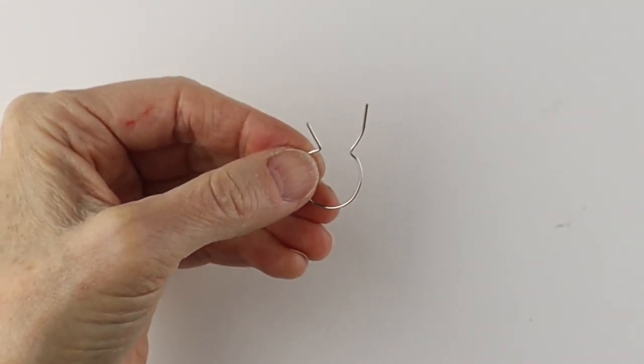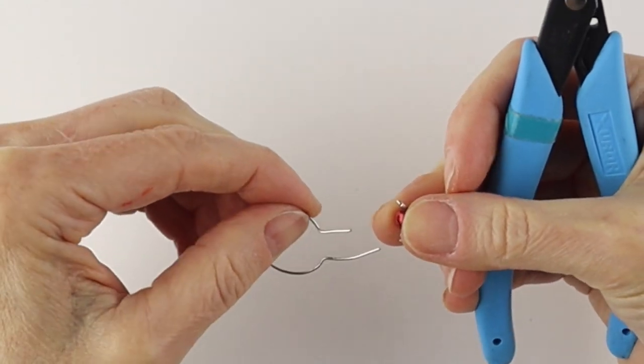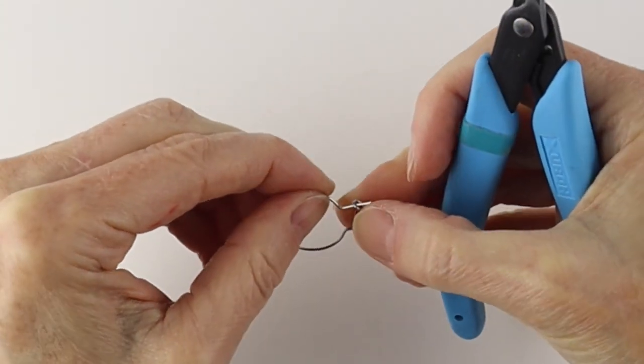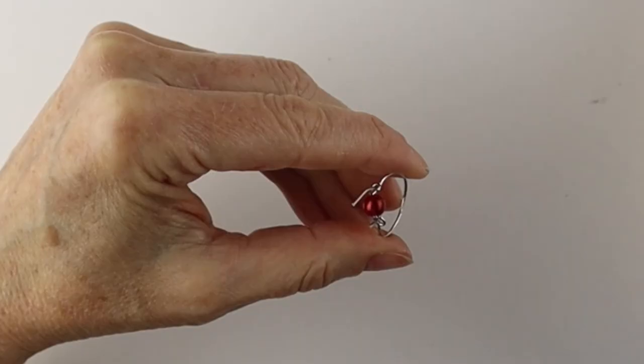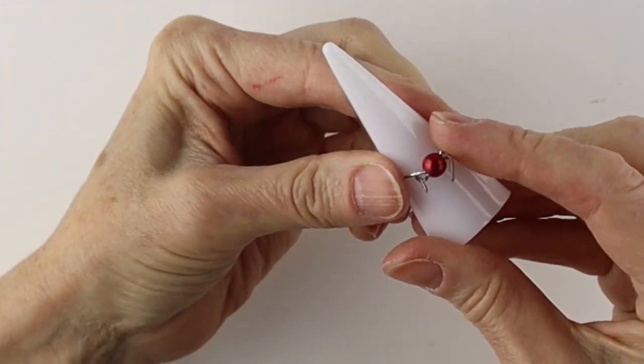Doesn't matter if they're exactly the same. Now stick these two loops on here, right down. If you want it sized, get a ring cone. You can get these on Amazon.